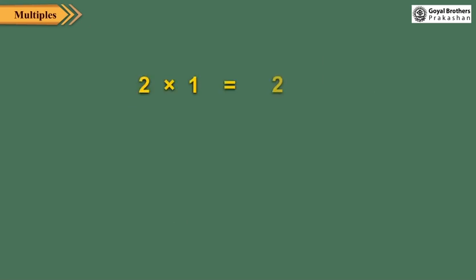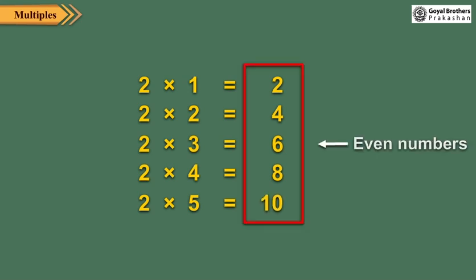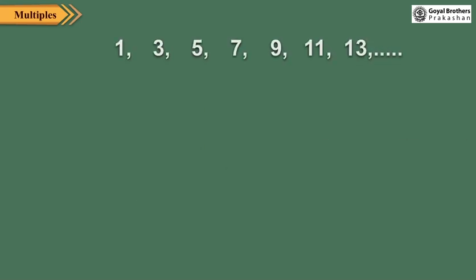You have read even and odd numbers in the previous classes. In fact, all even numbers are multiples of 2. Thus, even numbers are 2, 4, 6, 8, 10, and so on. The numbers which are not multiples of 2 are called odd numbers. None of the numbers 1, 3, 5, 7, 9, 11, 13, etc. are multiples of 2, so these are odd numbers.